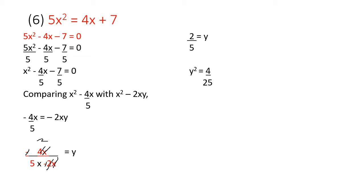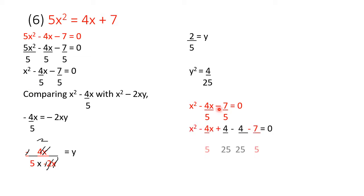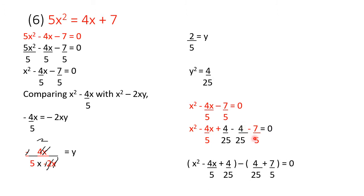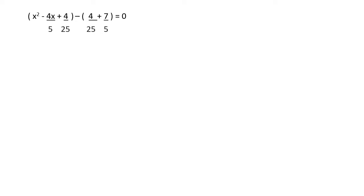After doing this, we add y squared to the given equation. We take the original equation x squared minus 4x upon 5 minus 7 upon 5 and insert plus 4 upon 25 minus 4 upon 25. We form two groups: the first three terms in one bracket and the remaining two in another. Since there is a minus sign, when we put terms inside the bracket the sign changes to plus. So: x minus 4 upon 5 plus 4 upon 25 in one bracket, and minus 4 upon 25 minus 7 upon 5 in the other. The first bracket is an expansion of x minus 2 upon 5 whole squared.